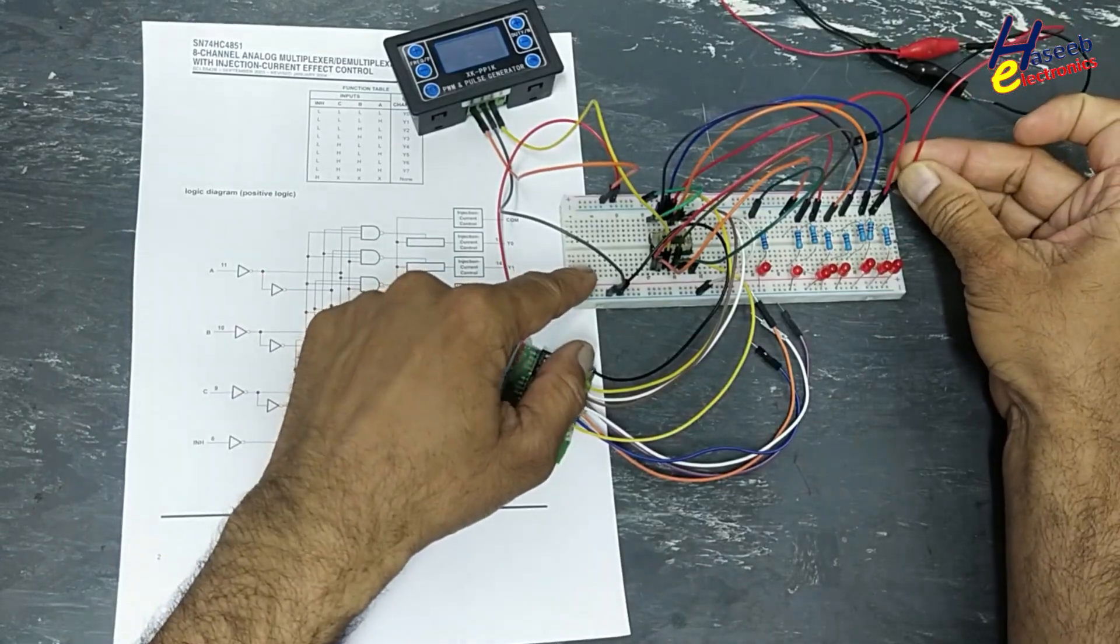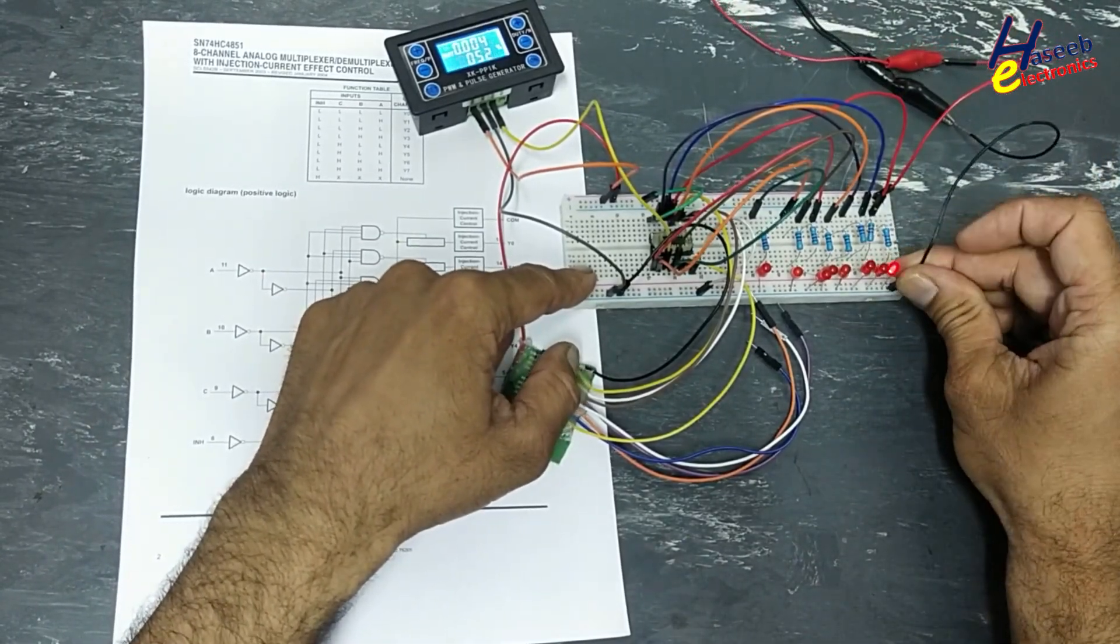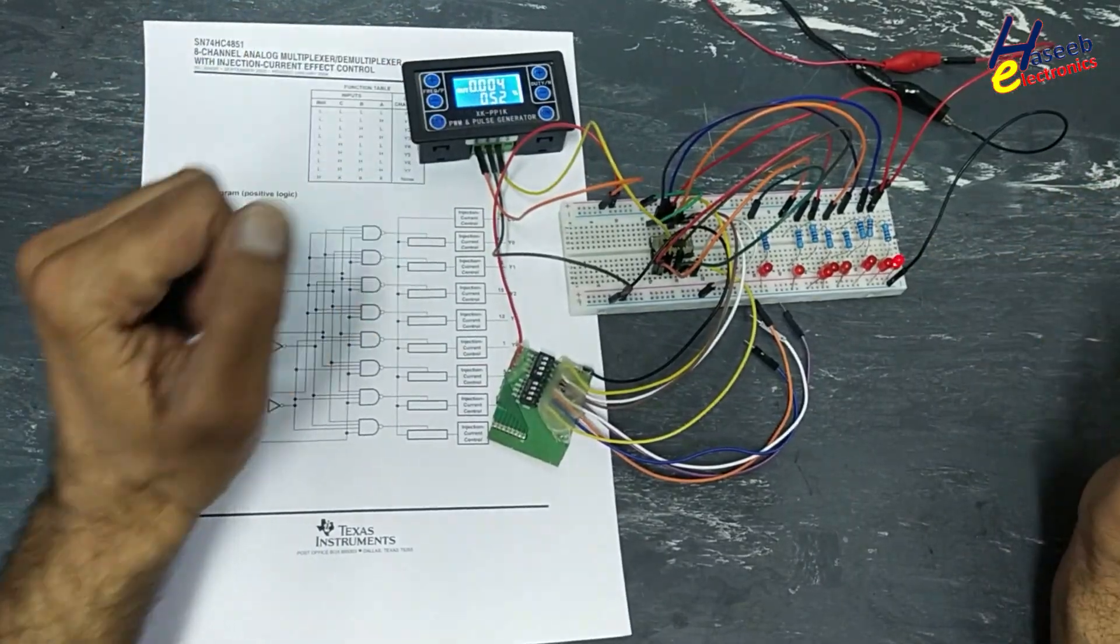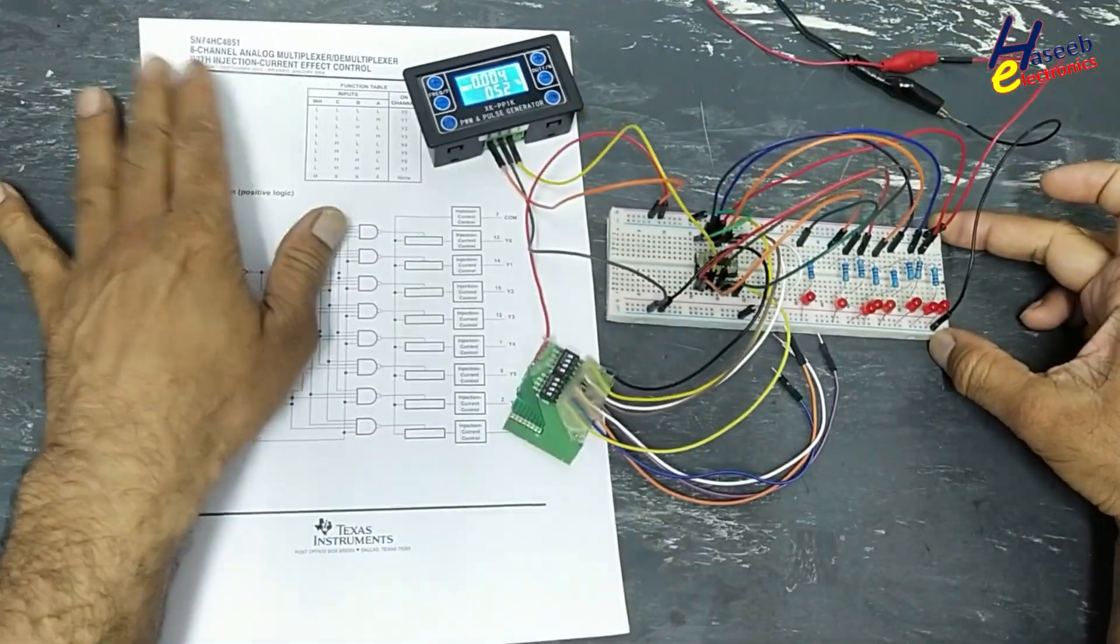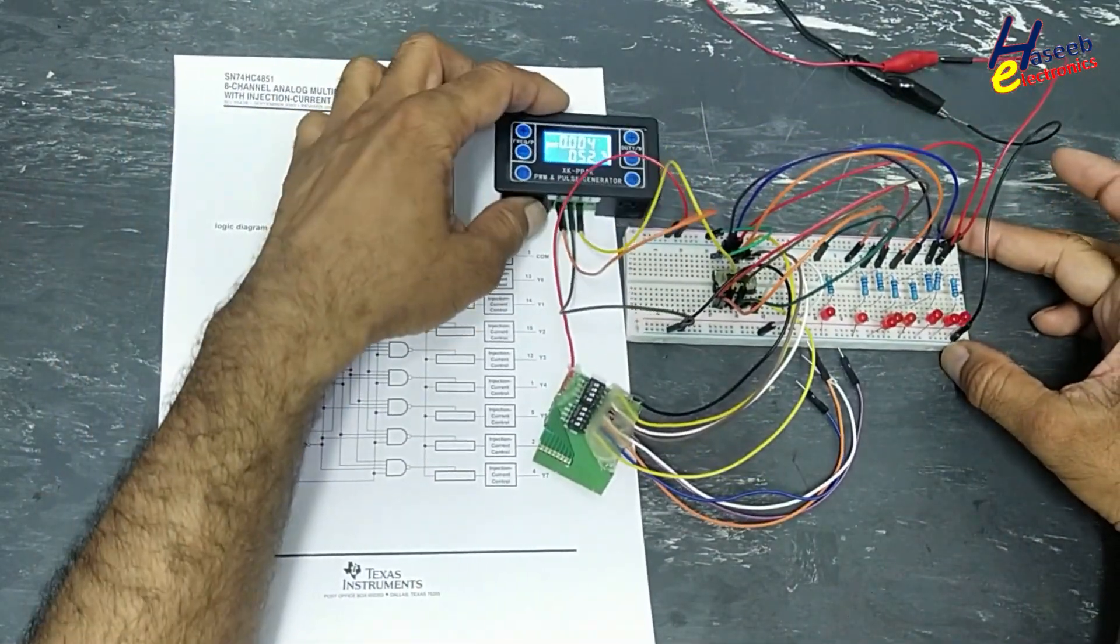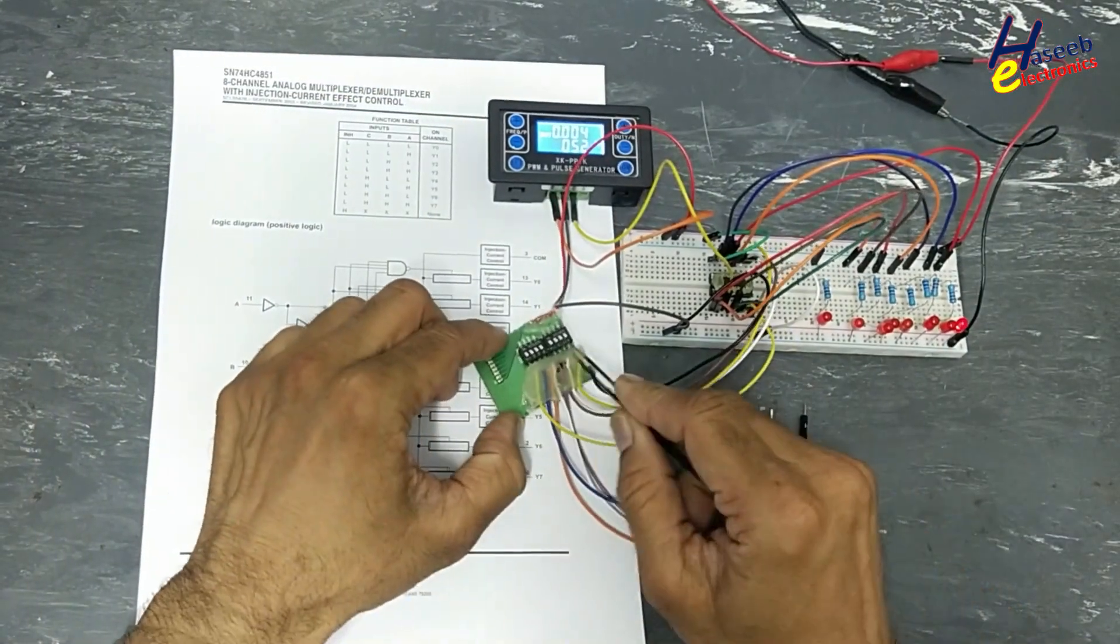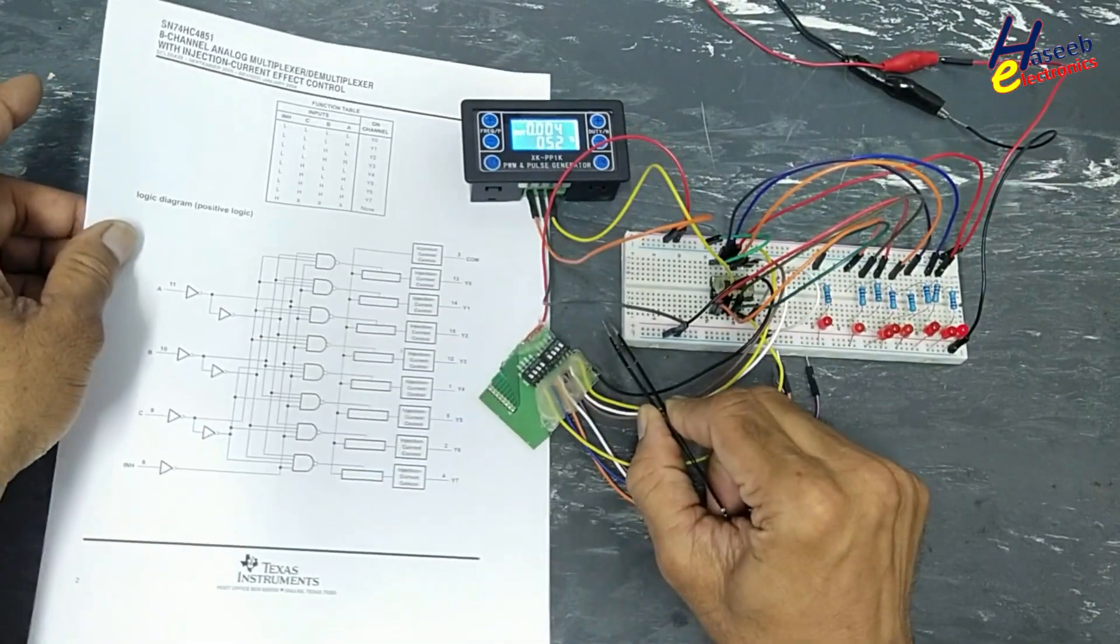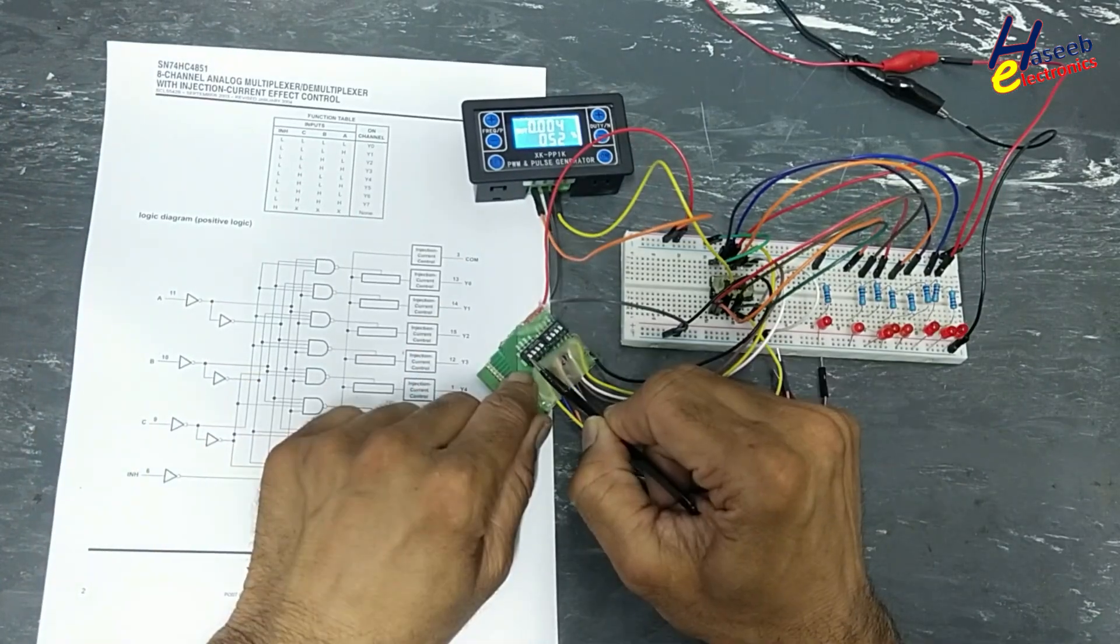Connections are okay. We have a four hertz signal here. Here are the address inputs. This time, inhibit signal low.